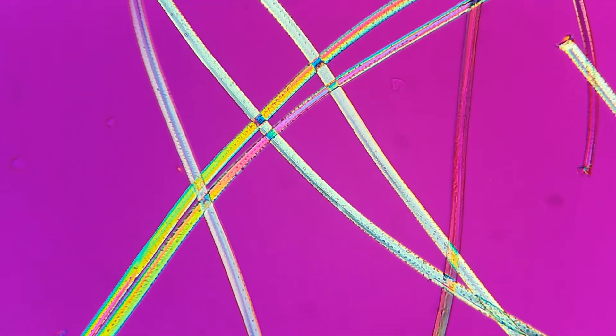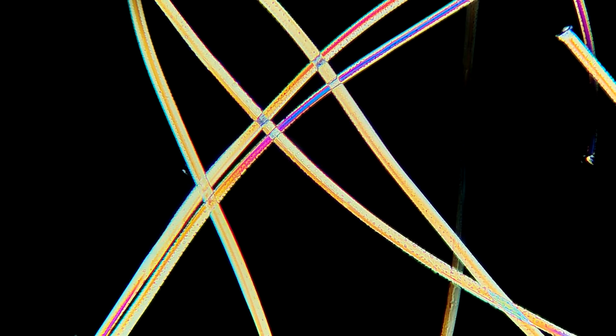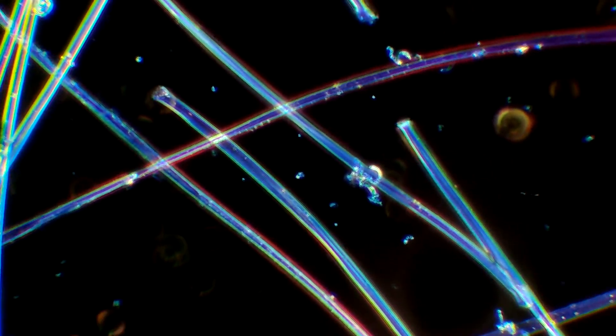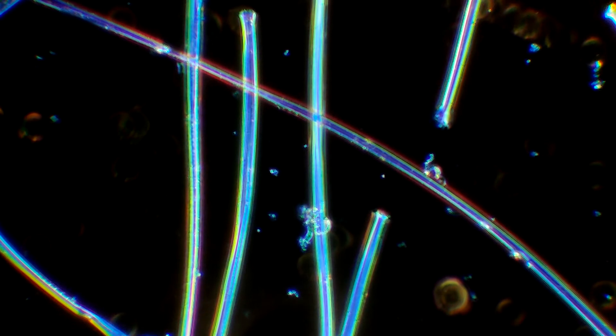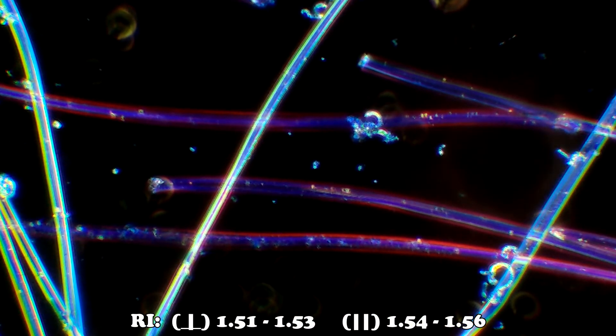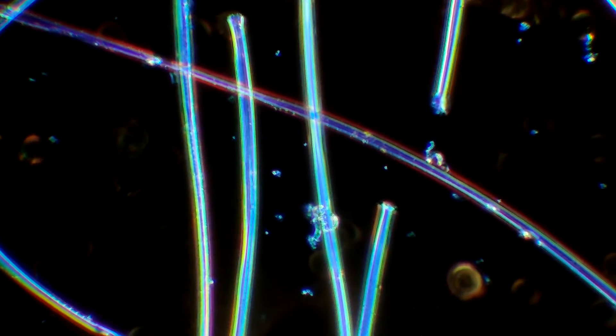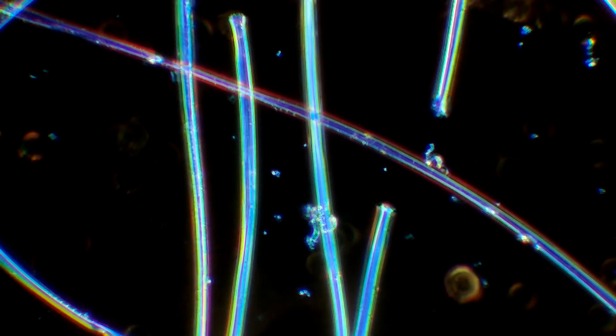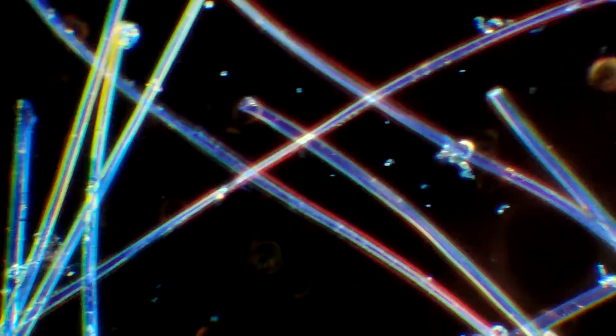Rayon exhibits a positive sign of elongation and uniform extinction. The fibers can periodically appear to have a grainy or finely pitted surface. Under central stop dispersion staining in 1-5-5 refractive index liquid, rayon often exhibits a blue-white to blue-green dispersion staining color in the perpendicular orientation, and blue-magenta in the parallel.